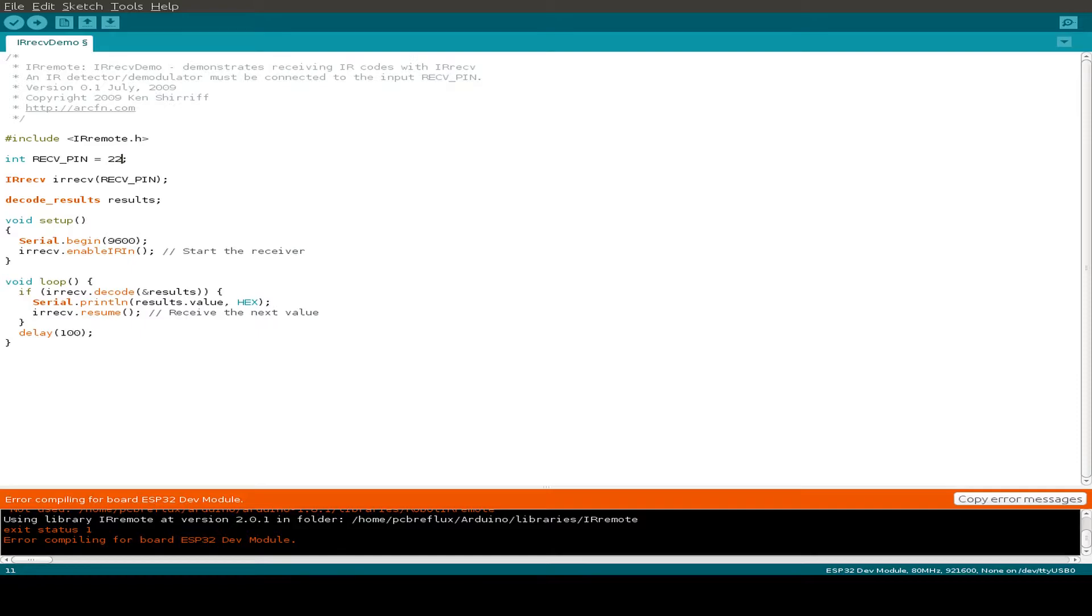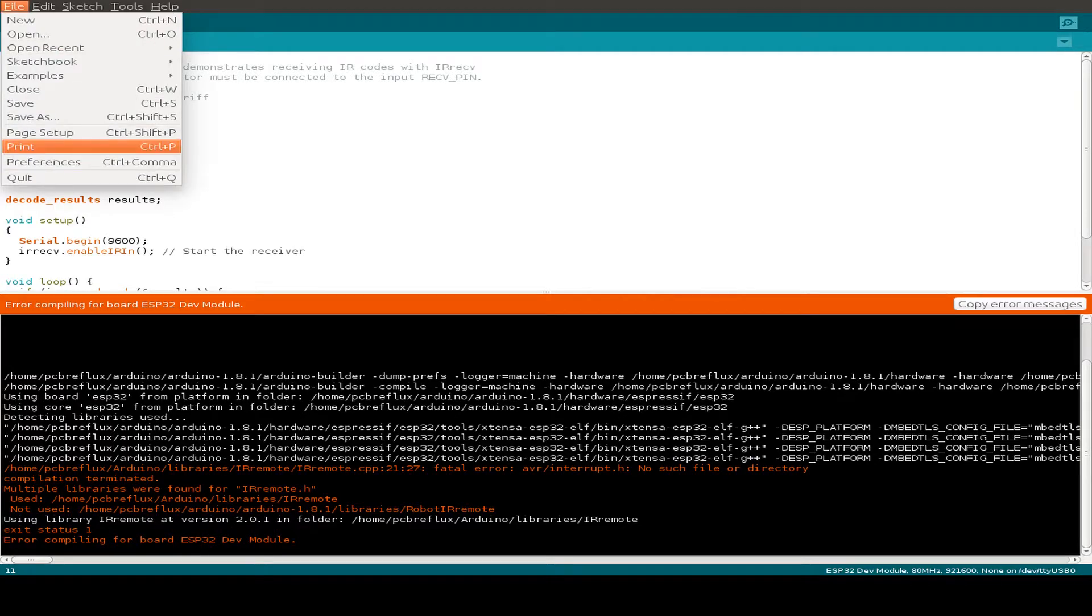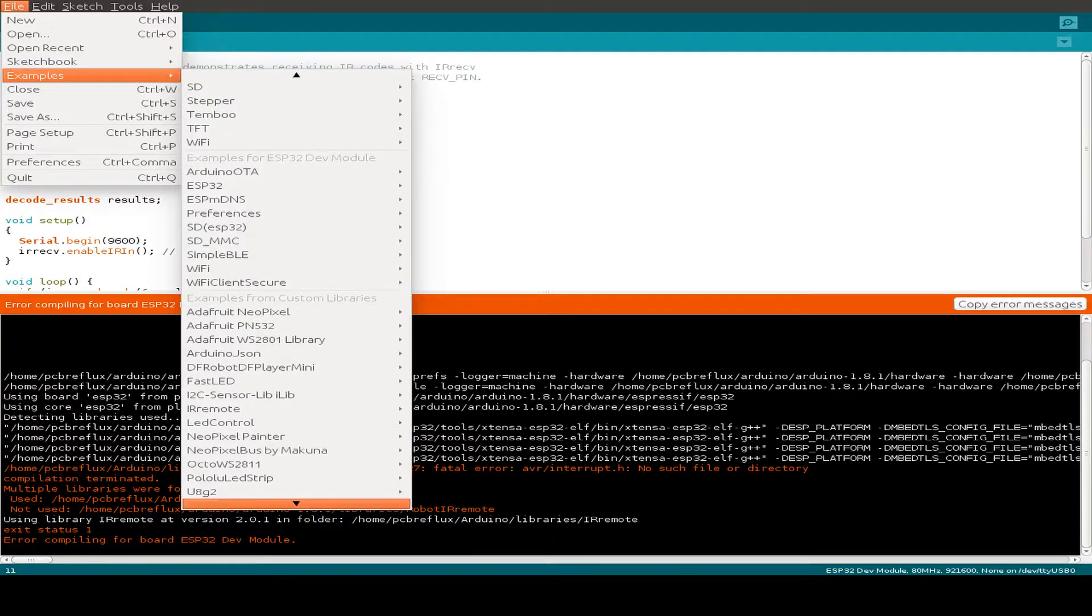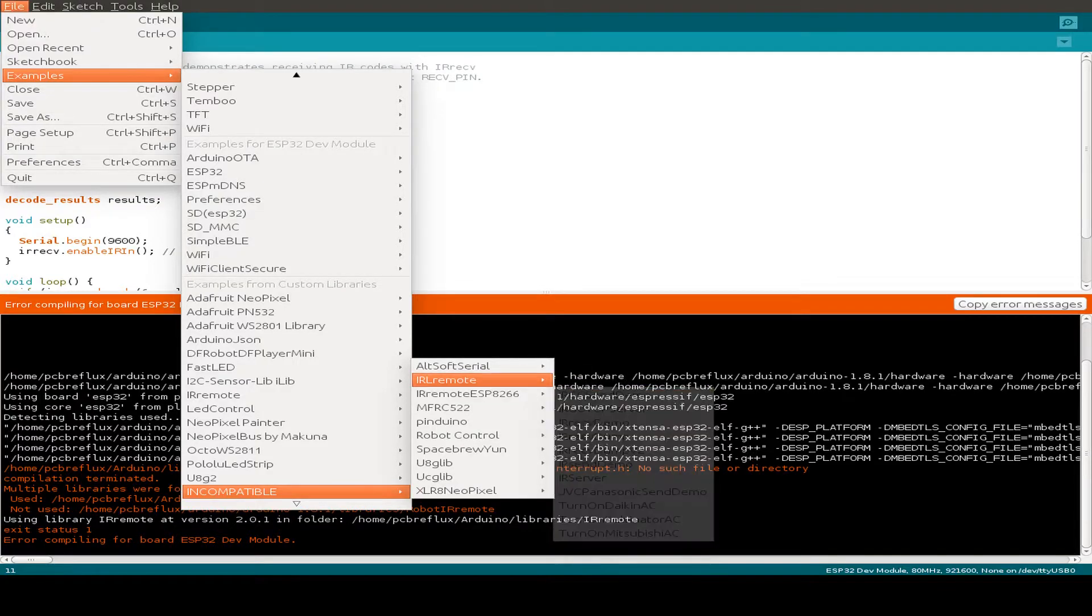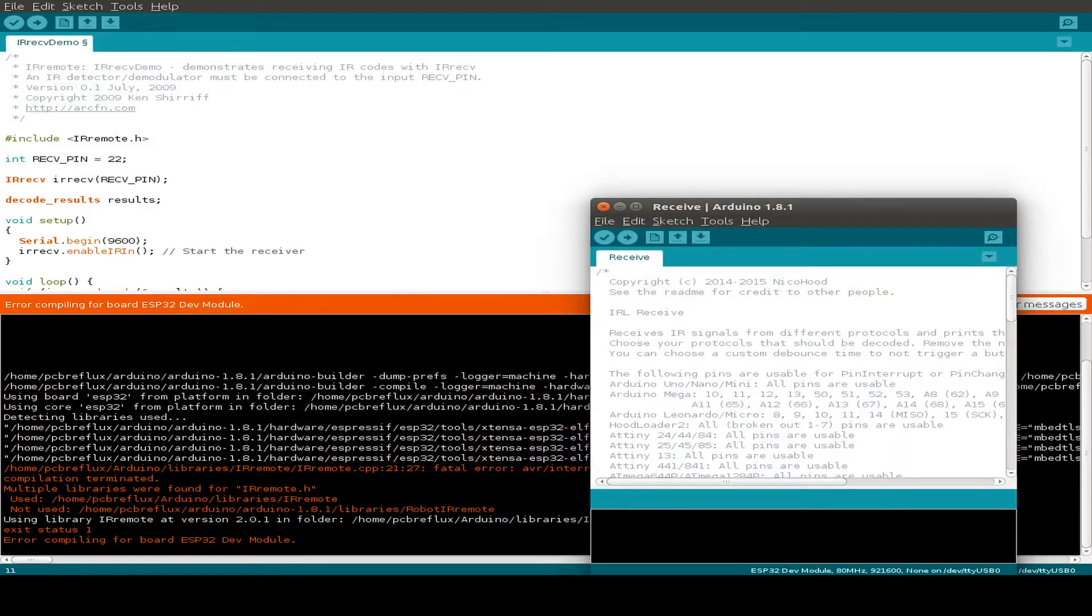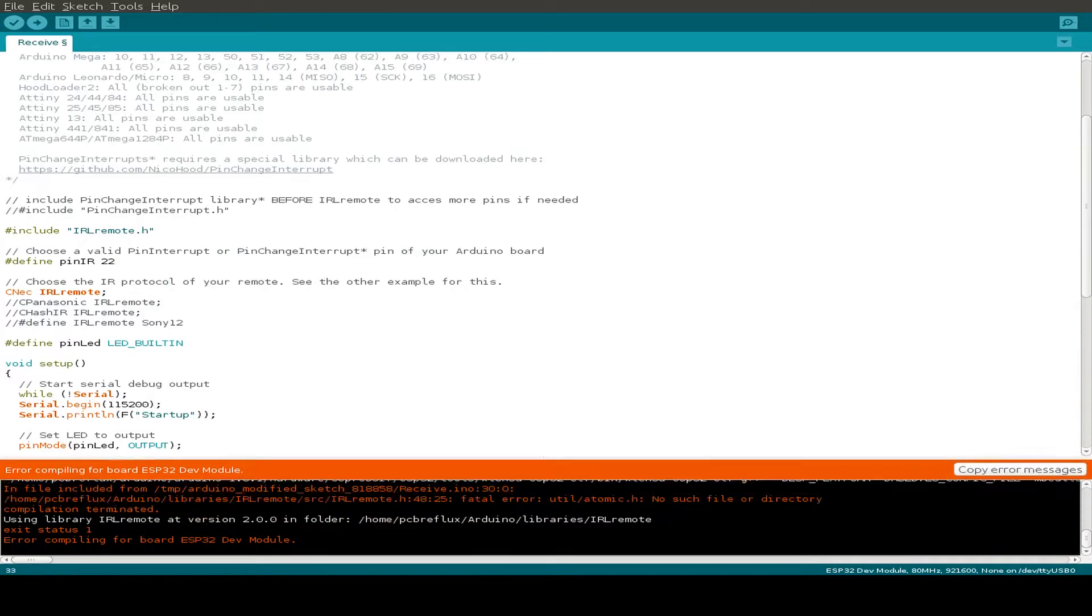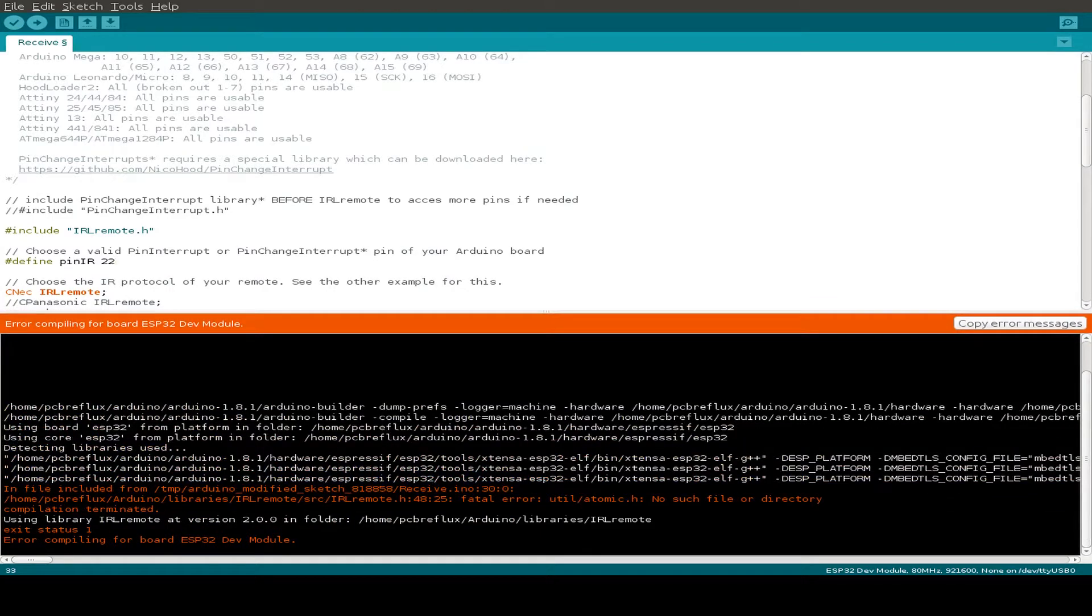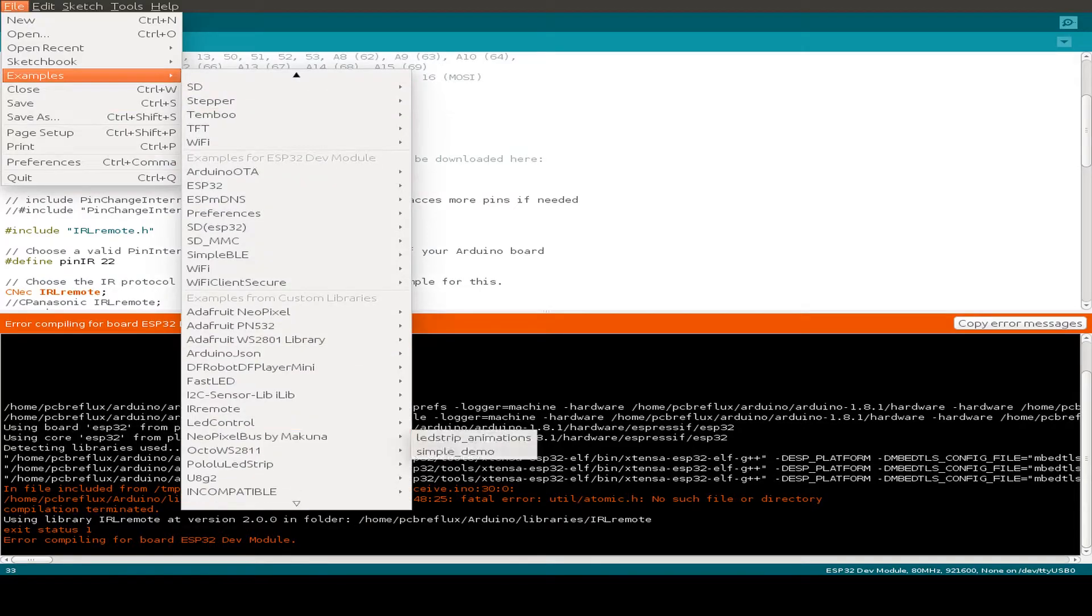Unfortunately, this is not without some changes compatible for our ESP32. We can maybe try another example, but the other examples are clearly marked as incompatible. So maybe we try this example, the receive example, and just change the code and try to compile this code. But it's also incompatible for our ESP32.